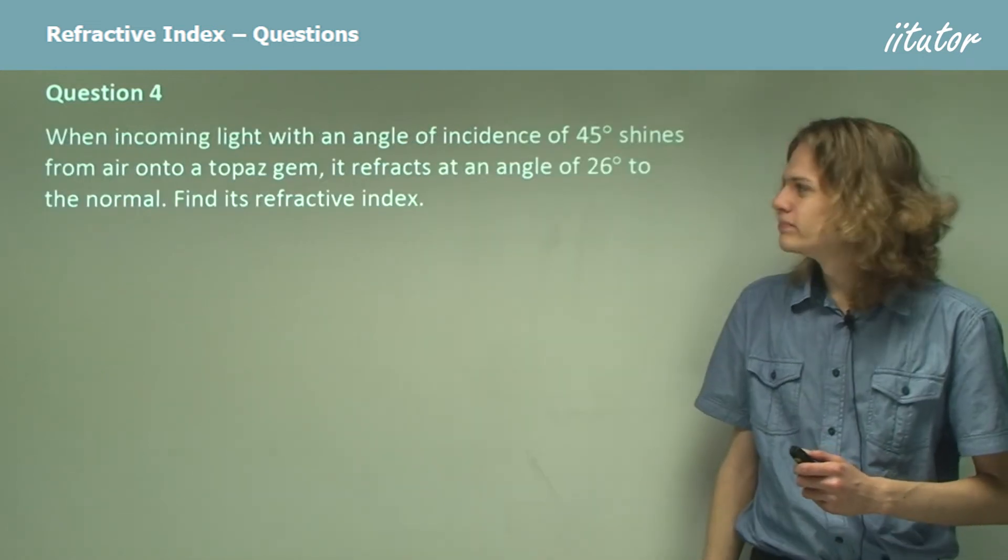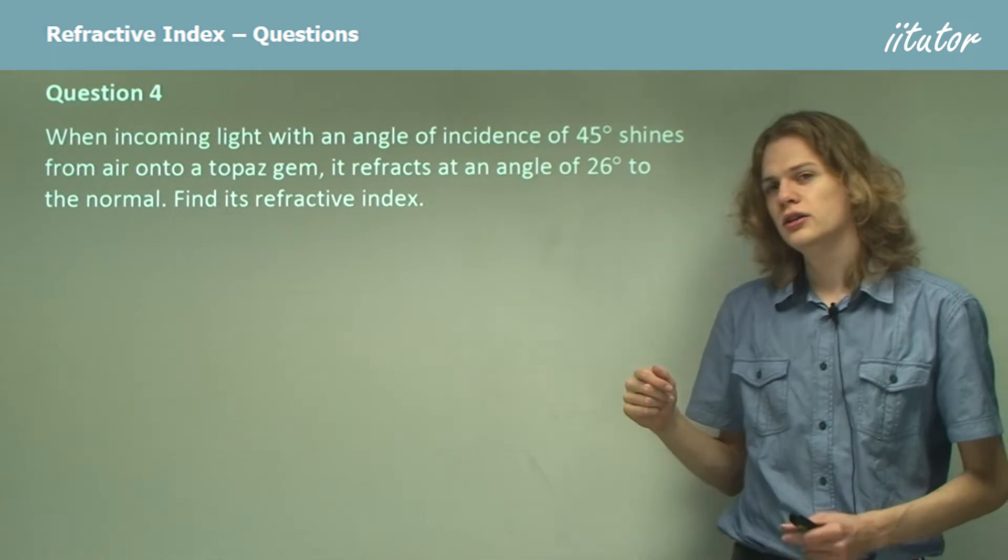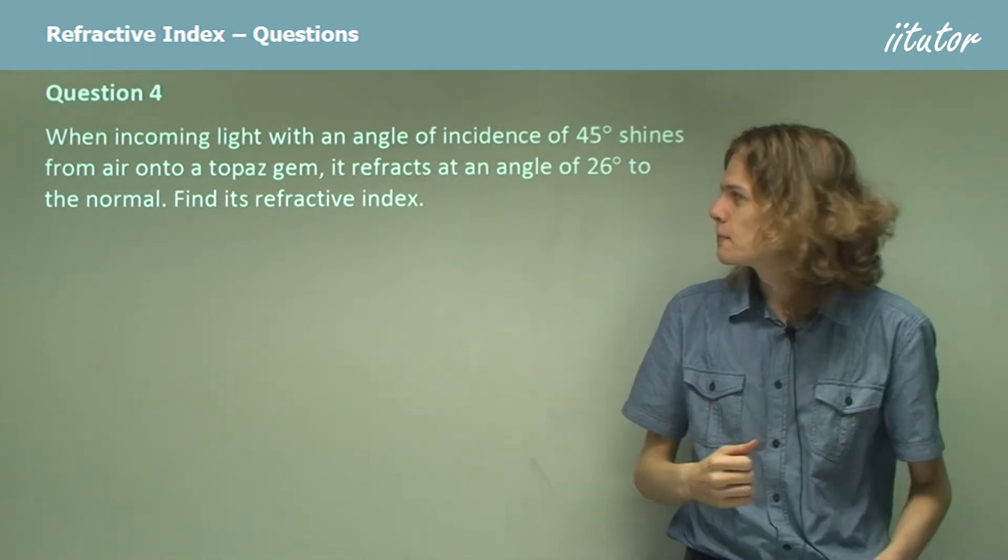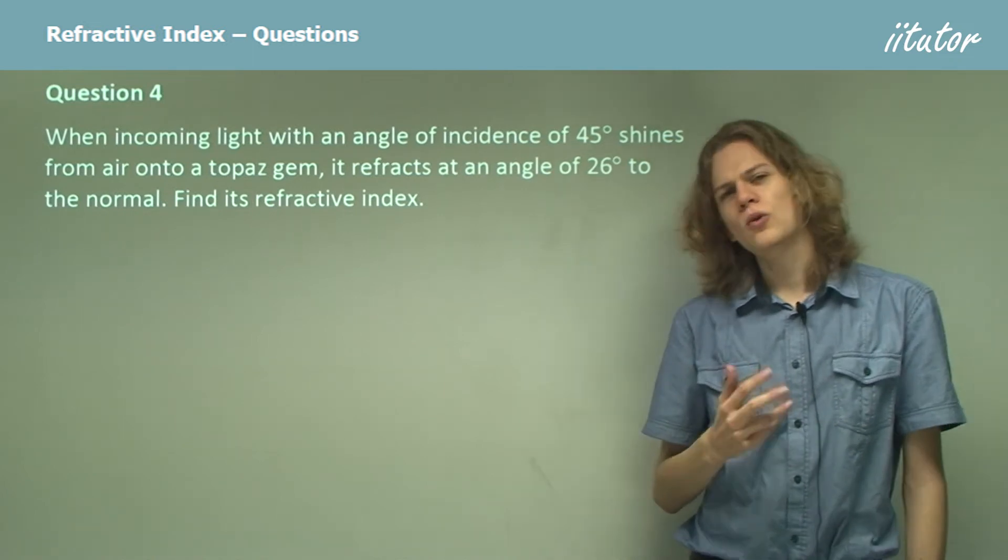Question 4. When incoming light, with an angle of incidence of 45 degrees, shines from air into a topaz, it refracts at this angle. Find its refractive index. Now, what equation do we use here?